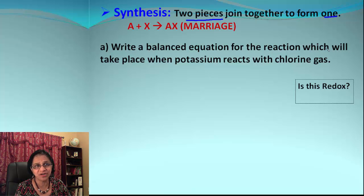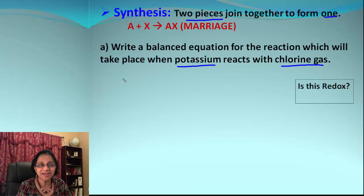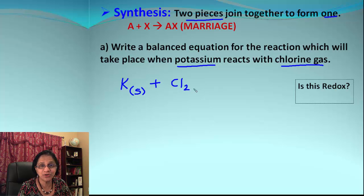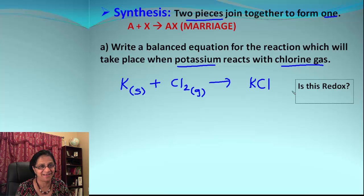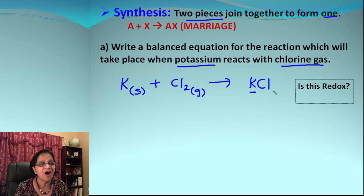Let's take the first example: write a balanced equation for the reaction between potassium and chlorine gas. Potassium is K and every metal will be in solid state, so we put (s) after potassium. Chlorine gas is Cl₂ — it's one of the diatomic elements and it's a gas. Potassium forms a potassium ion and chlorine forms a chloride ion, so the compound will be potassium chloride with formula KCl. Using the solubility chart, group one elements like potassium always form soluble salts, so we put (aq) for potassium chloride.